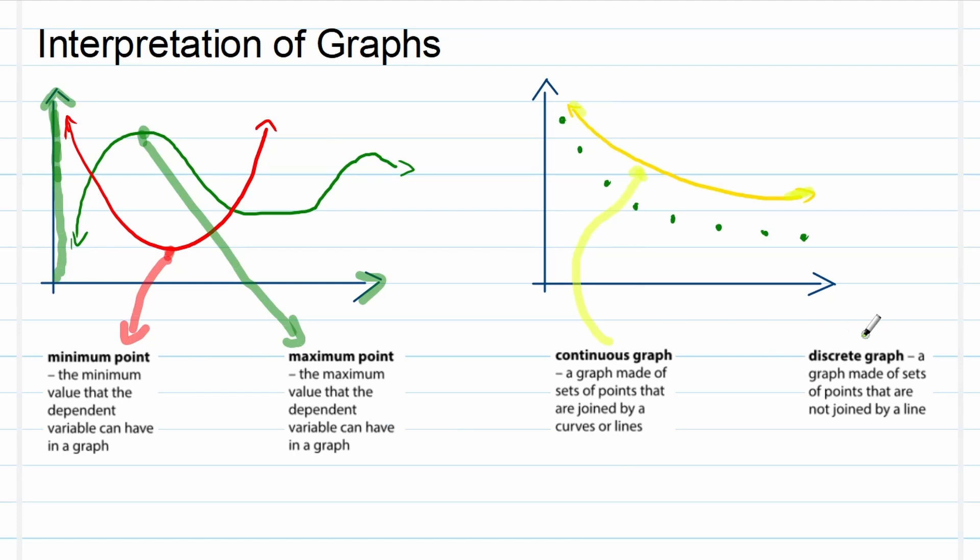But on the contrary, if you look at a discrete graph, it's a graph made of a set of points that are not joined by the line, like the green graphs. All these dots, they represent a discrete graph. It's not continuous, it's not joined by a line, it's just the dots. That is discrete.